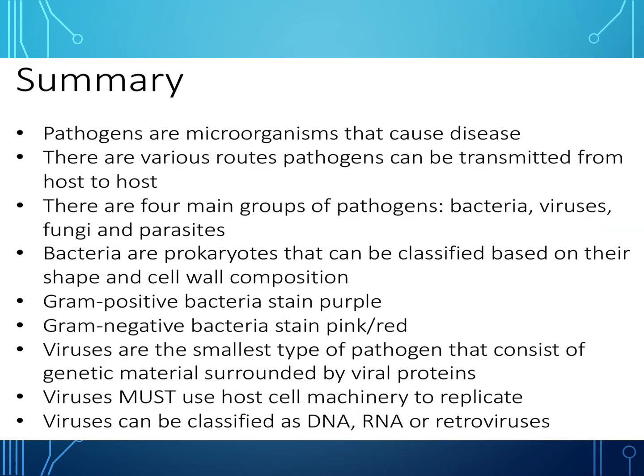In summary: pathogens are microorganisms that cause disease, transmitted host to host via air, droplets, food, and other routes. There are four main groups — bacteria, viruses, fungi, and parasites — all with different shapes. Bacteria are prokaryotes classified by shape and cell wall composition: gram positive stain purple with thick peptidoglycan and no outer lipid membrane; gram negative stain pink with thin peptidoglycan and an outer lipid membrane. The gram stain procedure uses crystal violet, iodine, alcohol, and safranin. Viruses are the smallest pathogens, consisting of genetic material and viral proteins, and must use host cell machinery to replicate. The three types of viruses are DNA, RNA, and retroviruses.